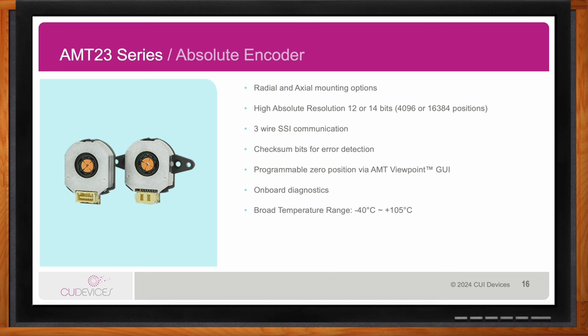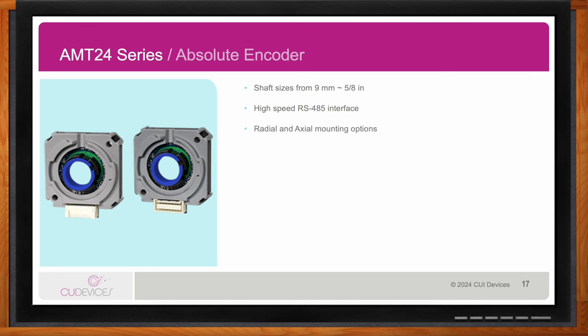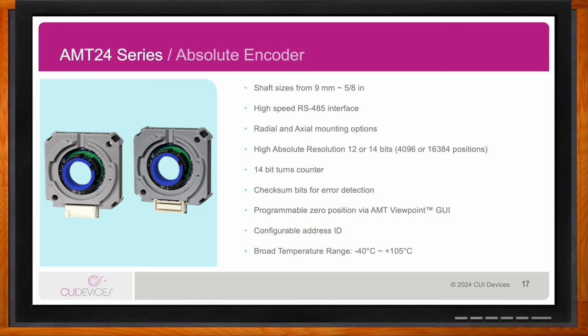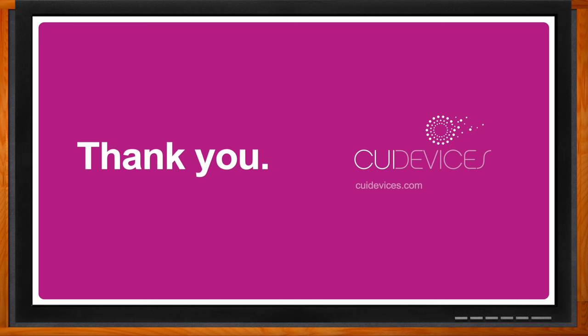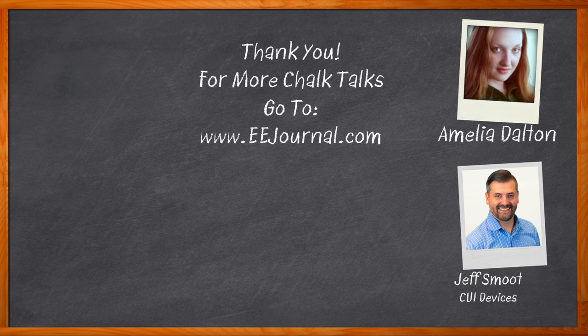The final encoder to highlight is the AMT-24 series. This takes the AMT-21 RS-485 encoder to a larger form factor, designed to fit motor shafts from nine millimeters up to five-eighths of an inch, compared to the AMT-21 and other absolute encoders which were designed for shaft sizes from two millimeters up to eight millimeters. This makes the AMT-24 the next size up for larger motor shaft applications. That's all for today — thanks so much to Jeff Smoot from CUI Devices. For more information, click the link to find additional resources from CUI Devices. For Chalk Talks, I'm Amelia Dalton from EEJournal.com — head to the Chalk Talks section of EE Journal or visit youtube.com/EEJournal.